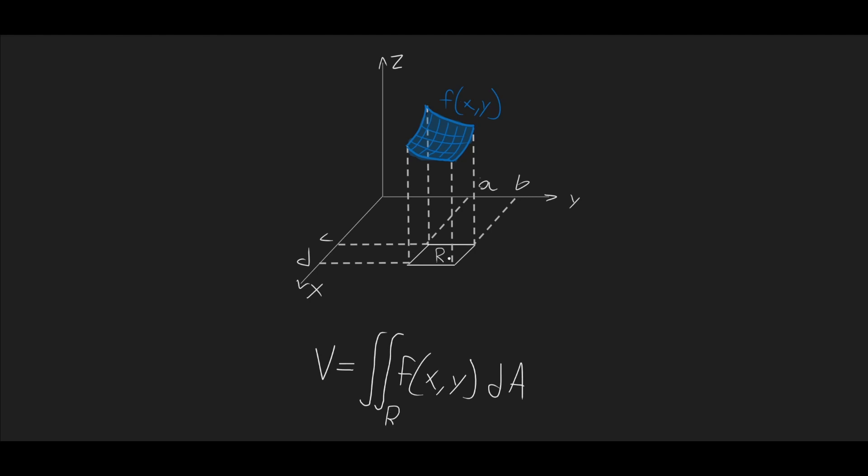of f of x, y, our surface, so the height of the surface, times dA, which is a small piece of the area on the region. So, what this is doing is taking the height, which is the value of the function, and multiplying it by a small piece of the area, and then adding it up both on the x direction and on the y direction, giving us volume.